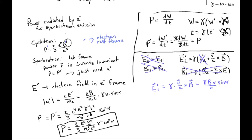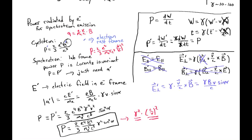Comparing to the cyclotron case, where the acceleration is a = evB/(m_e c), giving cyclotron power P = (2/3)(e^4/m_e^2 c^3)(v/c)^2, we see that synchrotron emission radiates power much faster — by a factor of gamma^2 and by a factor of (c/v)^2. Synchrotron radiation radiates so much more power both because of the Lorentz factor gamma^2 and because the electron is traveling so much closer to c.